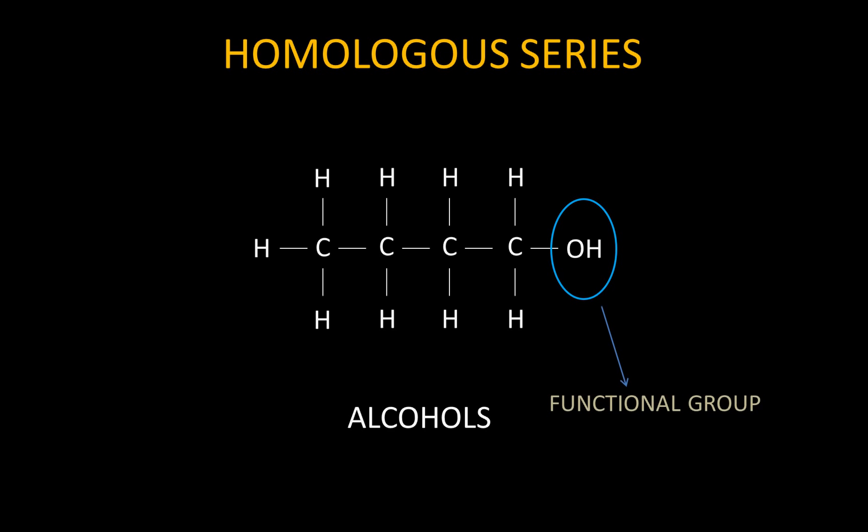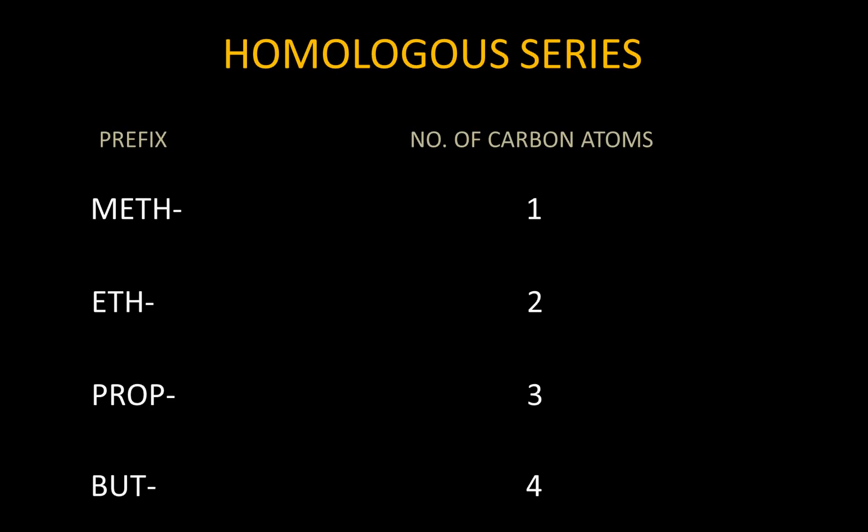Before I finish this video, I'd like to briefly explain the naming of these different compounds. You might have noticed patterns such as methane, methanol, ethane, ethene, ethanol, propane, propene, propanol, butane, butene, butanol, and so on. This is essentially a chemist's way of counting carbon atoms in organic compounds. For 1, 2, 3, and 4 carbon atoms, you've got meth-, eth-, prop-, and but-. Whatever homologous series suffix you add — whether it be -ane, -ene, or -anol — the prefixes always stay the same, and they tell you how many carbon atoms are in the compound. We'll talk more about naming in the next video.